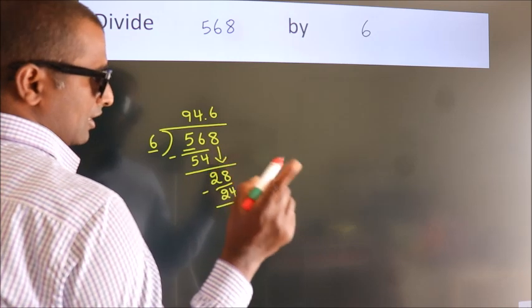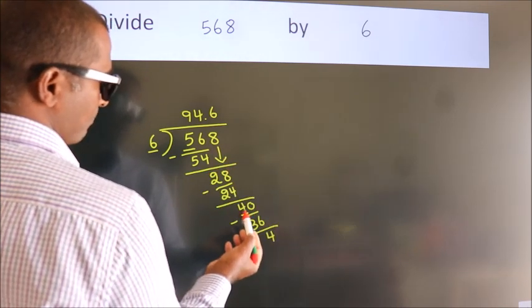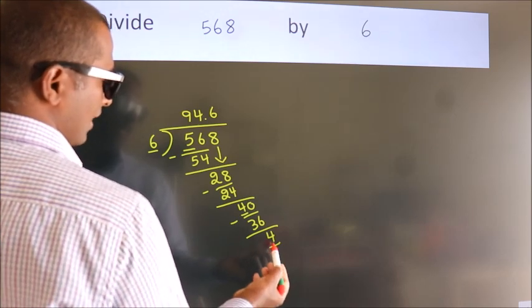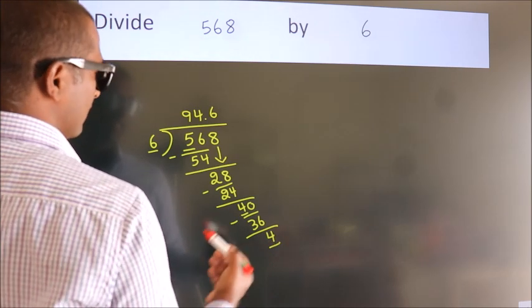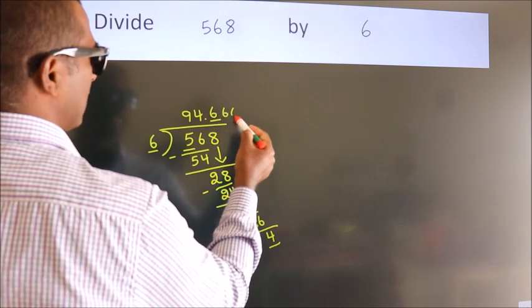Now you observe. We had 4 here and we got 4 again. So this is our quotient.